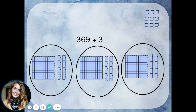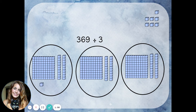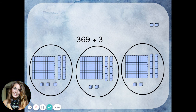Finally, I'll divide up my ones blocks, just like dealing cards, keeping it even and giving each group the same amount. I deal them out one at a time to each group until all 9 ones have been distributed, with 3 going to each group.